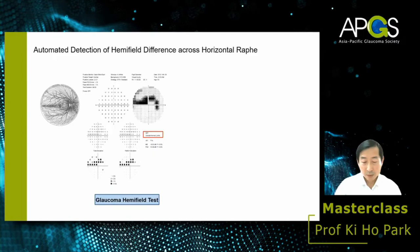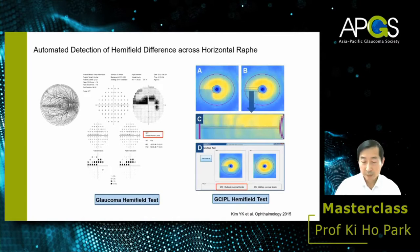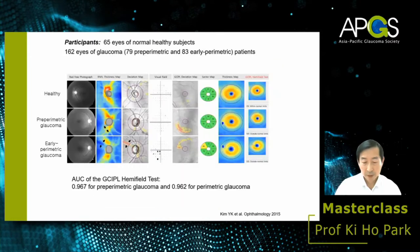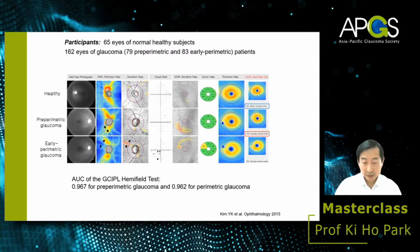In glaucoma, visual field defects are asymmetrical across the horizontal raphe, as seen in the glaucoma hemifield test. The same principle applies to GCIPL thickness. Custom software performs a GCIPL hemifield test to detect glaucoma, showing a positive temporal raphe sign. A healthy eye shows a normal GCIPL hemifield test; pre-perimetric glaucoma with early inferotemporal RNFL defect shows asymmetrical GCIPL loss in the corresponding region; early glaucoma with RNFL defect and visual field loss shows outside normal limits in the GCIPL hemifield test.